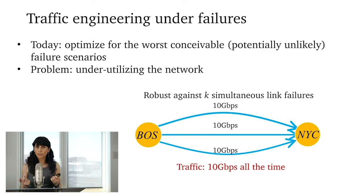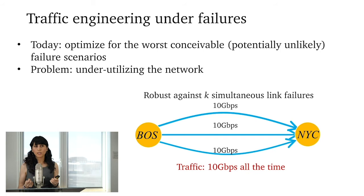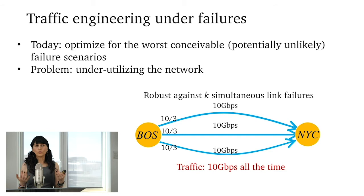Since the capacity of this link is, in this example, 10 gigabits per second, it means that we end up carrying 10 gigabits per second of traffic when these two links have failed. But because we want to be robust against these two failures, we are going to carry 10 gigabits per second all the time, even when these links haven't failed. And this is where this under-utilizing of the network comes to the picture. We end up sending 10 gigabits per second over three across all of these three links, which means that we are not utilizing this network in its capacity.